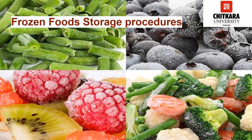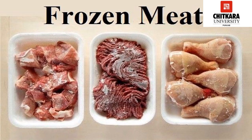Frozen foods must be kept at minus 18 degrees Celsius or lower to maintain quality. Fruits and vegetables received frozen will keep for months if properly wrapped. Fish and meats, properly wrapped, also have a relatively long freezer shelf life. Freezing fresh fruits and vegetables on the premises is time consuming and may be too expensive to consider. Fresh fruits must be properly prepared for freezing or they will not store well. All freezer products not properly wrapped will develop freezer burn, which is a loss of moisture that affects both the texture and flavor of the food.